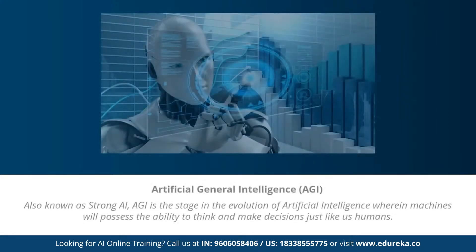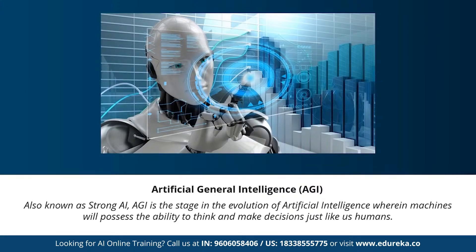Next, we have artificial general intelligence, also known as strong AI. This stage is the evolution of AI wherein machines will possess the ability to think and make decisions just like human beings. There are currently no existing examples of strong AI, but it's believed we will soon be able to create machines as smart as humans. Strong AI is considered a threat to human existence by many scientists, including Stephen Hawking, who quoted that the development of full artificial intelligence could spell the end of the human race.